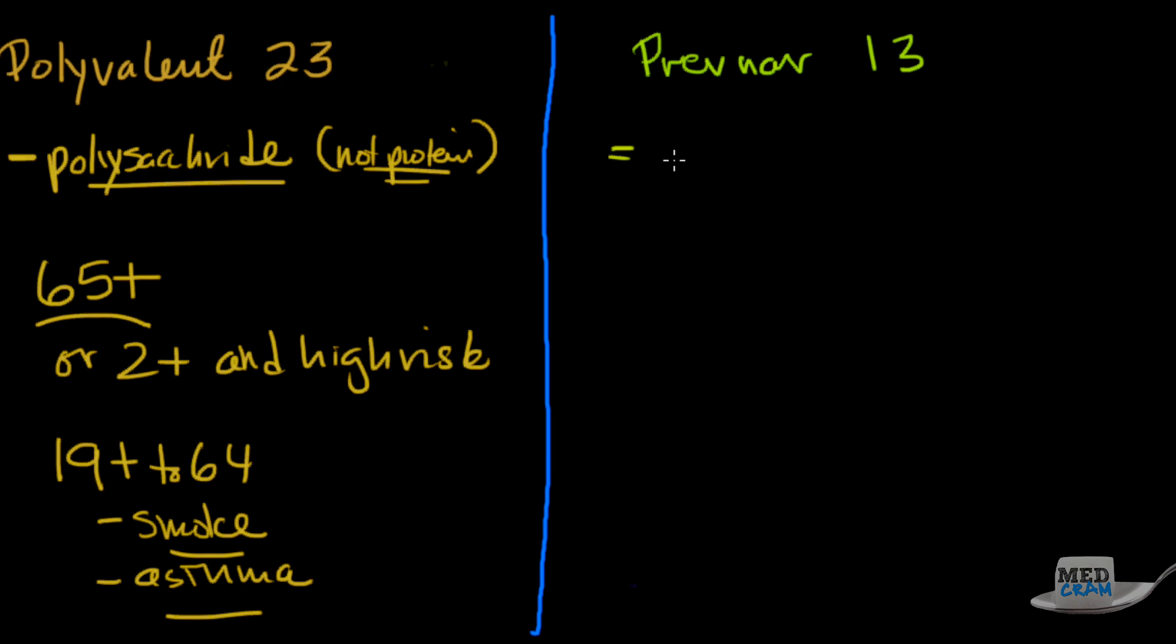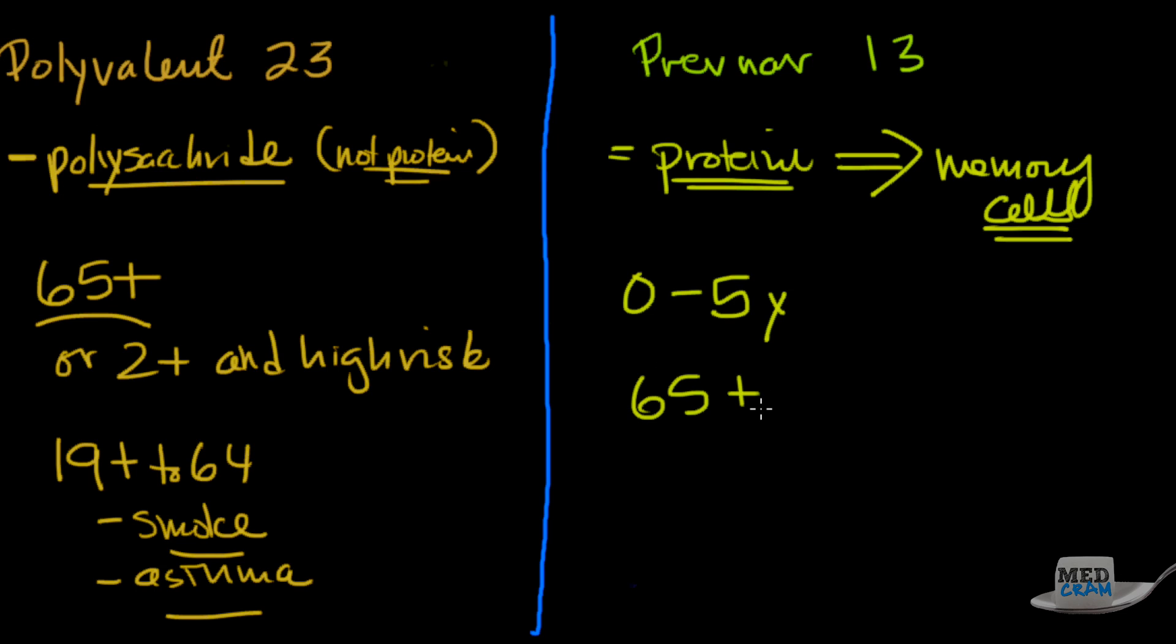Now the Prevnar has a dipteroid protein in it, and what that means is you get memory cells. So that's pretty good. And it's currently recommended for all children younger than five years old, so from zero to five years of age and all adults 65 plus. And this has been a recent thing here in 2014 is that anyone 65 years or older gets it, and people who are six to 64 if they have certain medical conditions. What they found is that this Prevnar 13 has really done an amazing job at reducing the invasive pneumococcal rates.